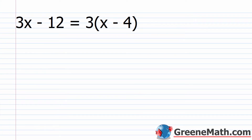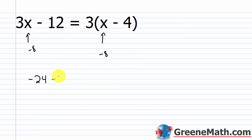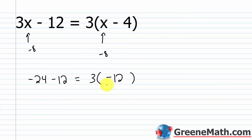Here's an example of an identity: 3x minus 12 equals 3 times the quantity x minus 4. Pick any number and plug it in for x — I'll pick negative 8. So 3 times negative 8 is negative 24, minus 12, equals 3 times the quantity negative 8 minus 4. Negative 8 minus 4 is negative 12, so 3 times negative 12 is negative 36. Negative 24 minus 12 is also negative 36. True statement.